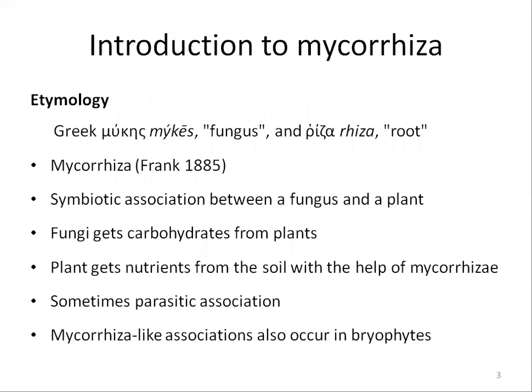The term mycorrhiza was first used by Frank in 1885. Mycorrhiza is a Greek word derived from 'mykes' meaning fungus or mushroom, and 'rhiza' meaning root. Mycorrhiza is a mutualistic symbiotic association between a fungus and a plant. The plant makes organic molecules such as sugars by photosynthesis and supplies these to the fungus, and the fungus supplies the plant water and mineral nutrients such as phosphorus taken from the soil.